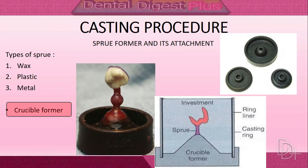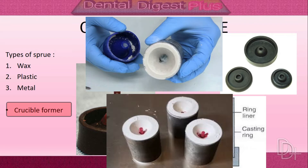The sprue is attached to a crucible former, usually made of rubber, which forms the base of the casting ring during investing procedure. Crucible formers can be made of metal, plastic, or rubber. They form a conical depression in the investment which guides the flow of molten metal.